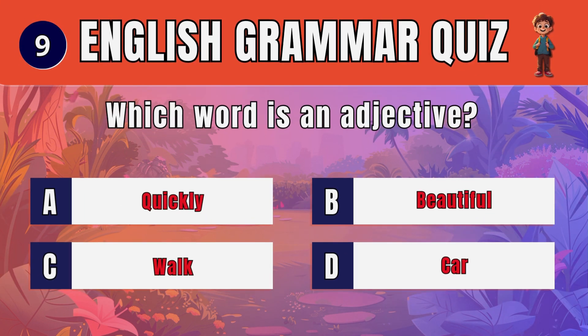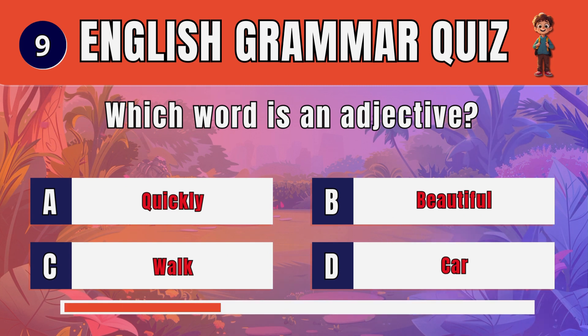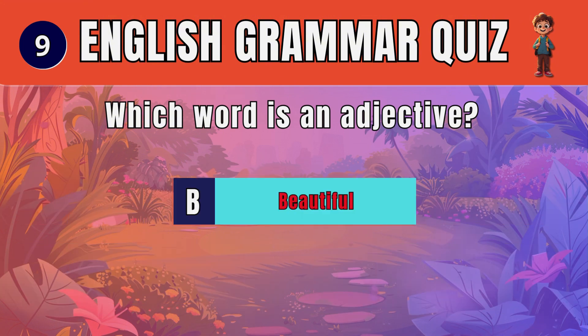Question 9. Which word is an adjective? The answer is: B. Beautiful.